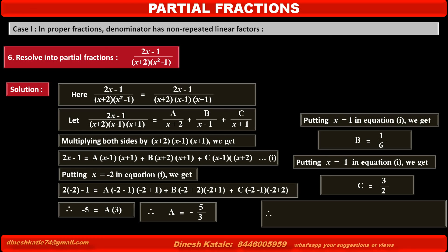Therefore, the given fraction 2x minus 1 upon (x plus 2)(x minus 1)(x plus 1) equals minus 5 upon 3(x plus 2) plus 1 upon 6(x minus 1) plus 3 upon 2(x plus 1).